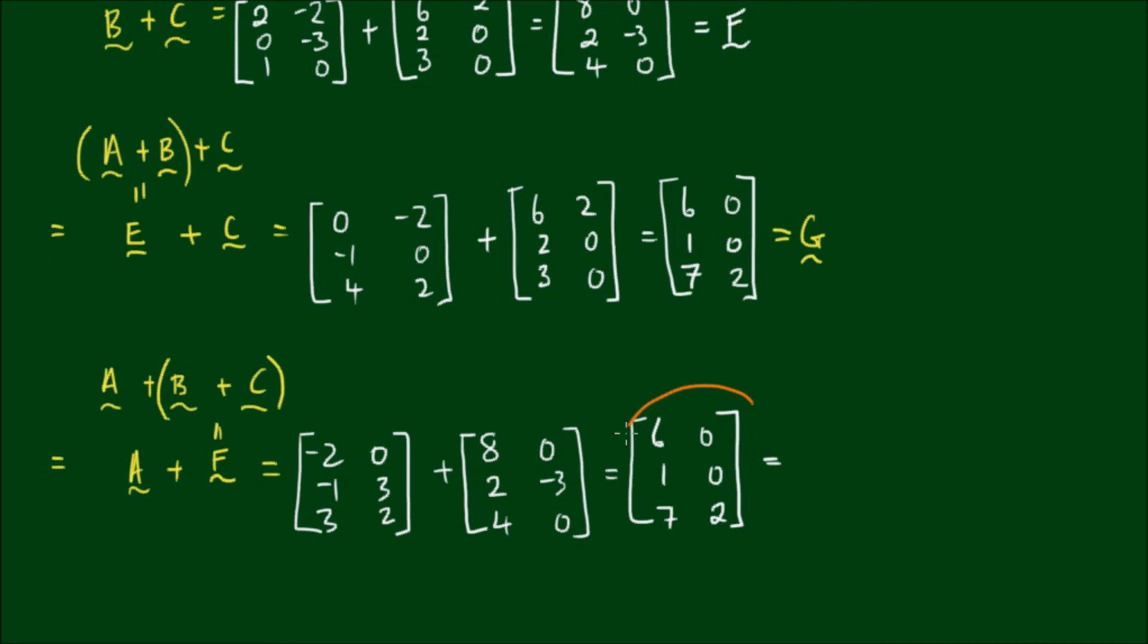So as we can see, the resultant matrix is exactly the same as above, and again we have matrix G. So what that means is with the addition of matrices A, B, and C, or the addition of any 3 matrices that have the same order, it doesn't matter where we put the parentheses or which ones we add first, we will still end up with the same result. So we say that matrix addition is associative. In other words, matrix addition satisfies the law of associativity.